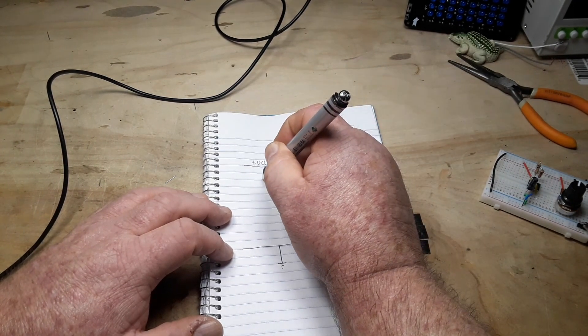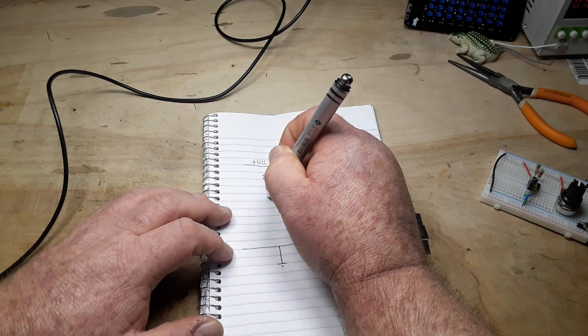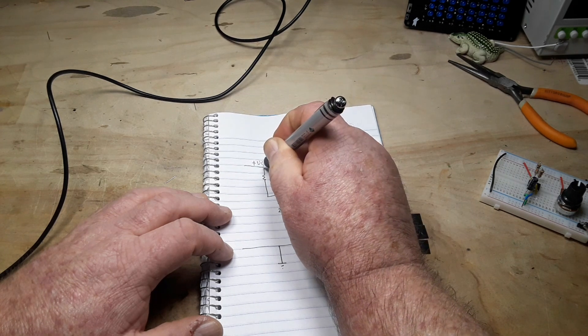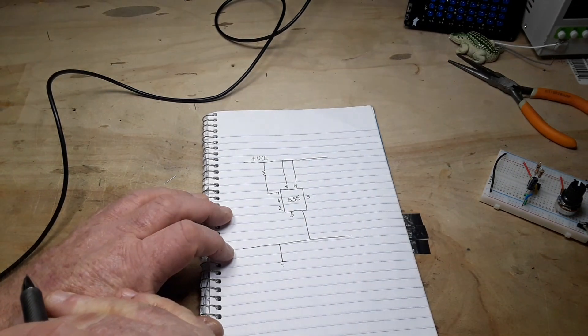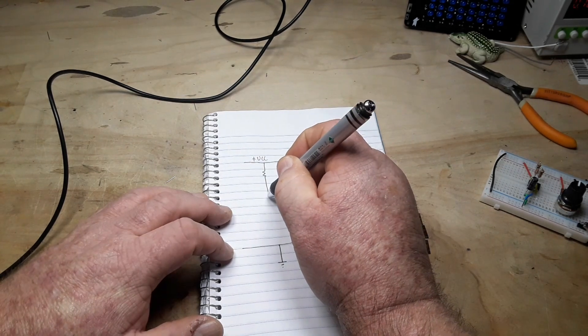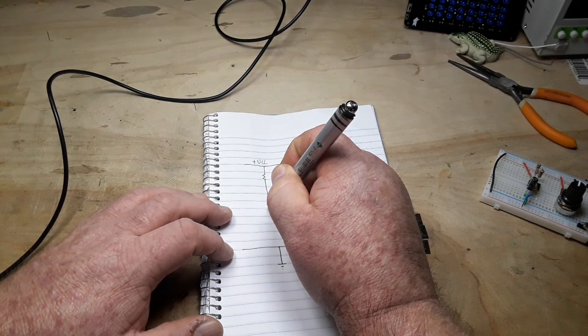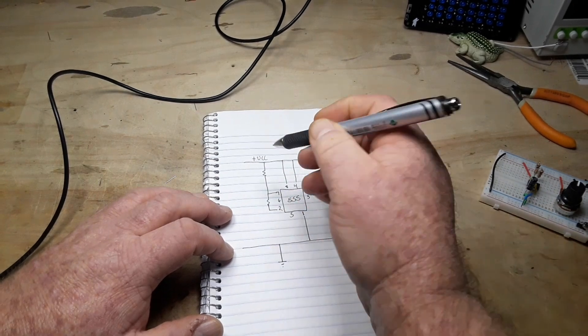And then we have R1, which goes from VCC to pin 7. And we have R2, which goes to pin 6.